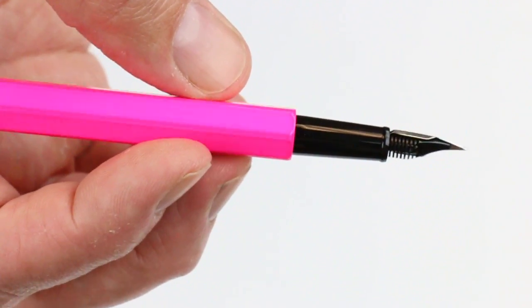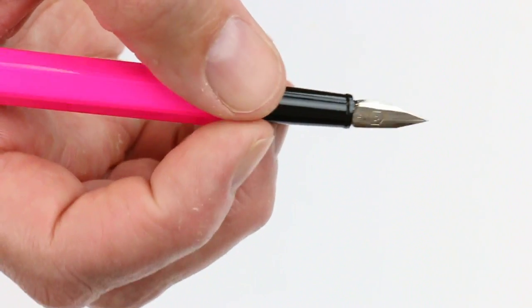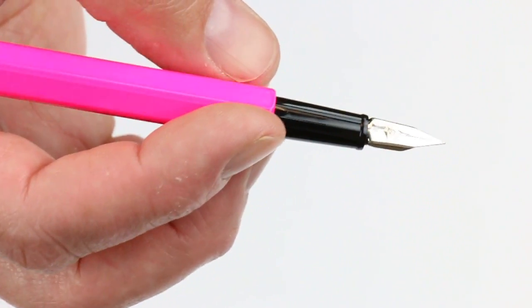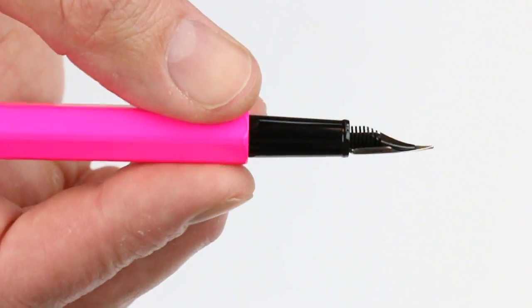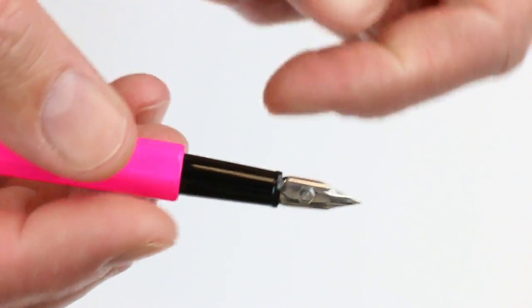The pen has a black glossy resin section and a stainless steel chrome colored nib and the feed you can see on the back side of the nib.